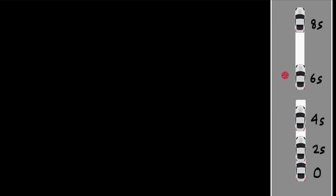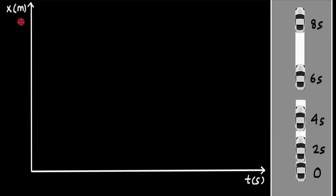Let's try to show this type of motion — where the velocity is changing and in this case increasing — on a position-time graph. On the x-axis we have time, and we can mark 2, 4, 6, and 8 seconds. Let's try to see where the car would be at different time instants.